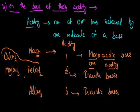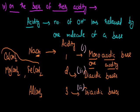So on the basis of acidity, bases can be classified into three categories: the first is monoacidic base, the second is diacidic base, and the third is triacidic base. That covers the classification of bases. Next time we will be dealing with the physical and chemical properties of these bases.